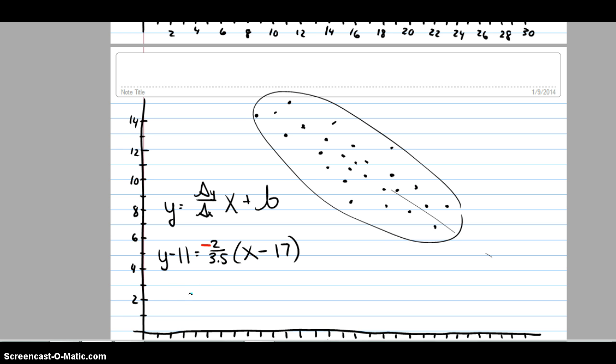So, we have y minus 11 equals that would be approximately negative 0.57x. Negative times negative is going to go positive. But I'm going to multiply the fraction by my 17 to get 9.71. And now I add the 11 to it on both sides. The SD line is y equals negative 0.57x plus 20.71.